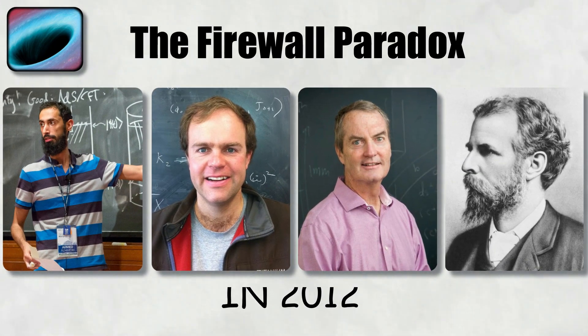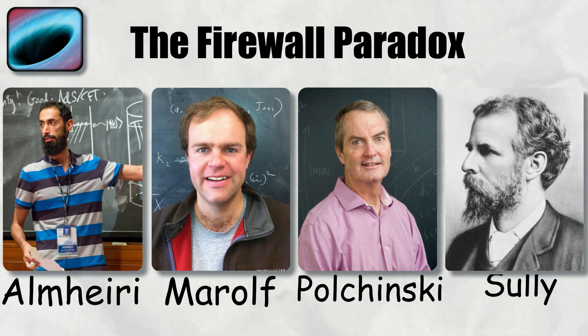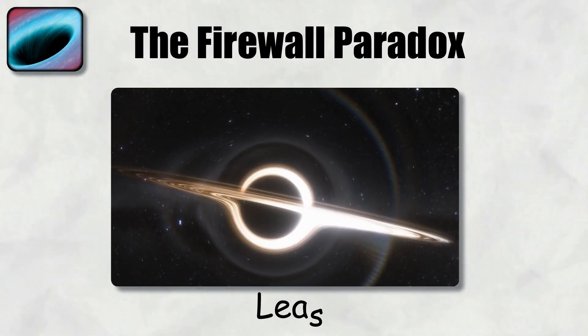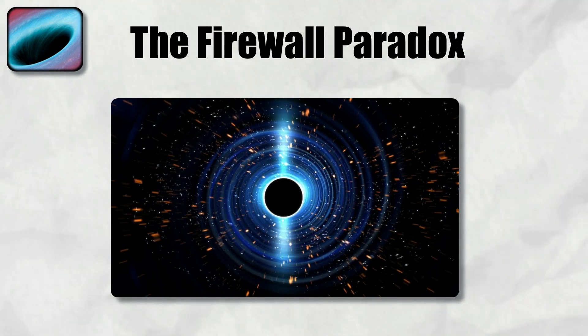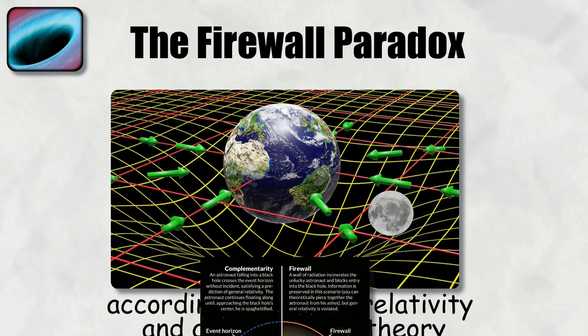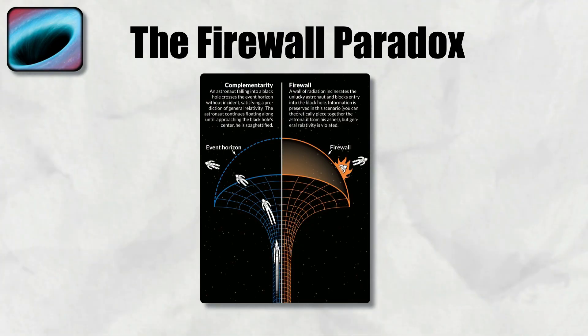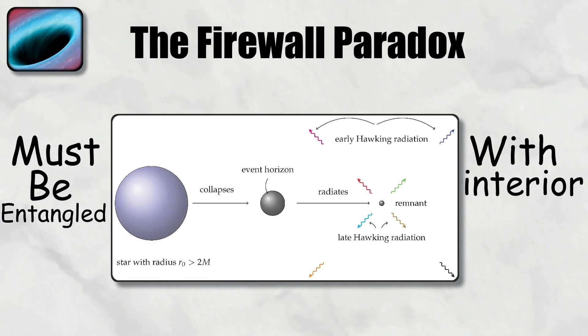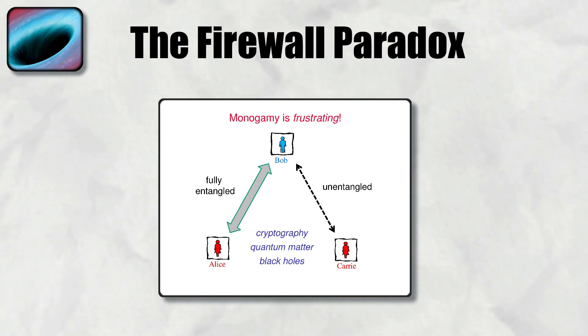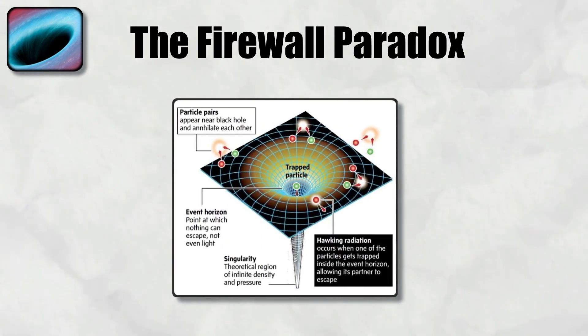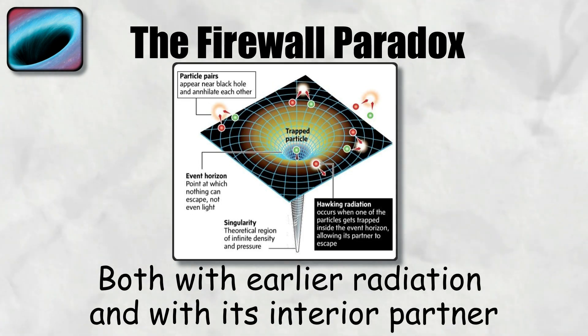In 2012, a group of physicists Almheri, Merolf, Polchinski, and Sully, often abbreviated as AMPS, showed that combining these requirements leads to a sharp conflict. Consider a black hole that has already radiated away at least half of its entropy. The outgoing Hawking radiation is entangled with earlier radiation to preserve information. At the same time, according to General Relativity and Quantum Field Theory, a freely falling observer crossing the event horizon should experience nothing unusual due to the equivalence principle. For this to hold, the radiation just outside the horizon must be entangled with interior modes. Quantum mechanics, however, enforces the monogamy of entanglement. A quantum system cannot be fully entangled with two independent partners at once. The outgoing Hawking particle cannot be maximally entangled both with earlier radiation and with its interior partner. This contradiction suggests that one of the assumptions must fail.